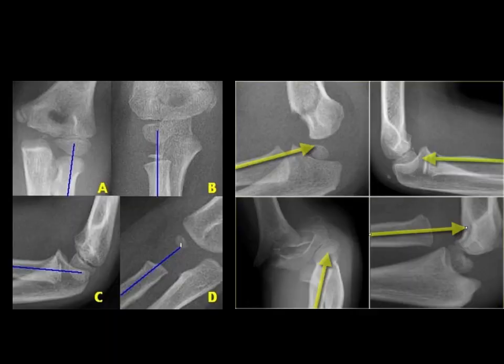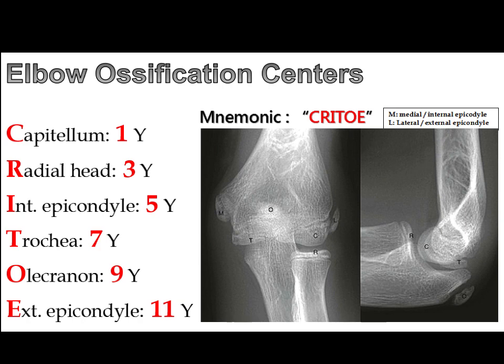We should always be able to draw a line through the radius and capitellum. If we're unable to do so, we're worried about an element of dislocation. We always want to look at our elbow ossification centers, and we have a mnemonic for this — CRITOE — where the ossification centers appear at 1, 3, 5, 7, 9, and 11 years, starting with the capitellum and ending with the external epicondyle.